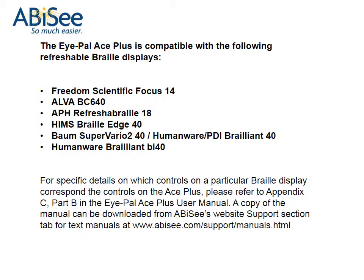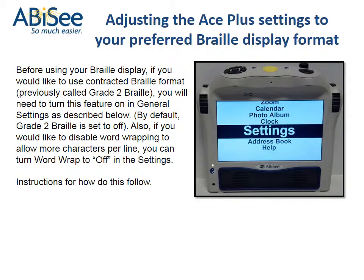A copy of the manual can be downloaded from ABC's website support section tab for text manuals at www.abc.com/support/manuals.html.